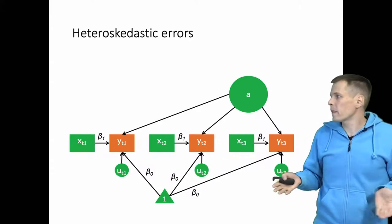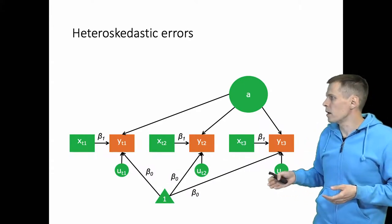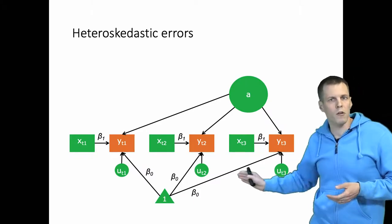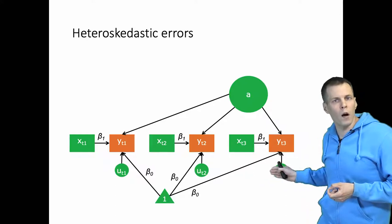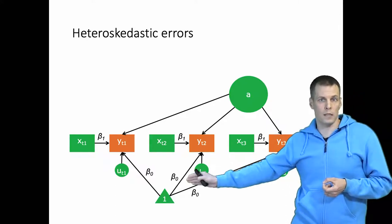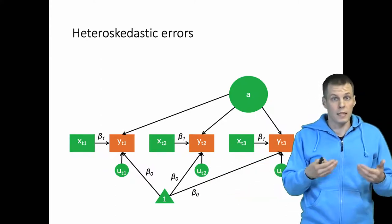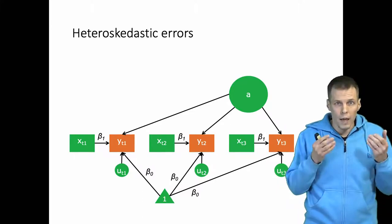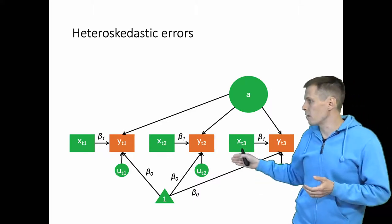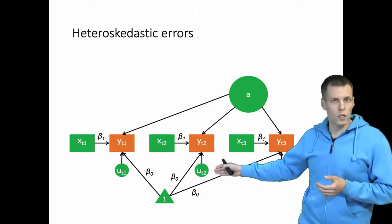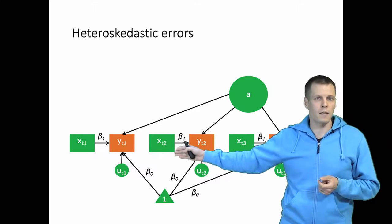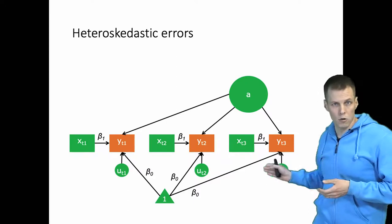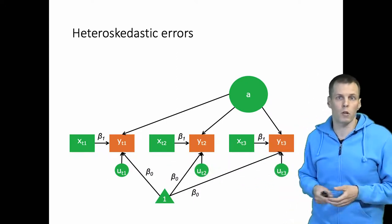We can also model heteroscedastic errors. Instead of constraining the error variances to be equal, we allow each error to be freely estimated — this is heteroscedasticity over time. It does not account for every type of heteroscedasticity; for example, if the variance of ut2 depends on X, that would not be captured. But it does account for heteroscedasticity over time, which is sometimes an important consideration.